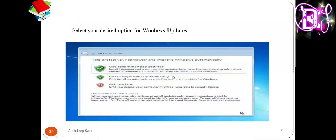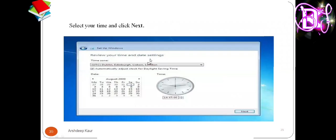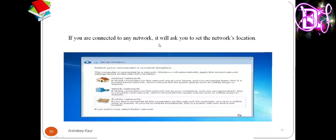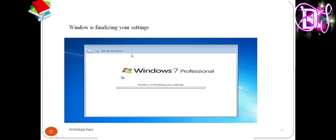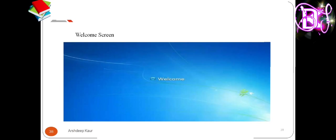Now select your desired option for Windows Update — it helps protect your computer and improve Windows automatically. Next, select the time and date and click Next. If you are connected to any network, it will ask you to set the network location — set it according to your Wi-Fi or network connection. Now Windows is finalizing your settings. The progress bar you see is called booting — until you see the desktop, this time period is the booting process.